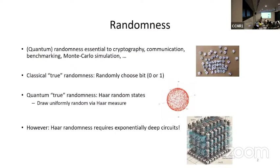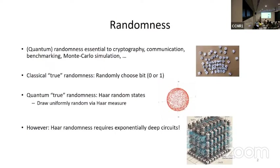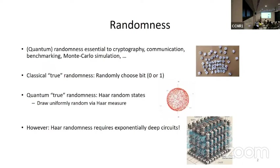So why do we care about randomness? Pseudorandomness is essentially about randomness, and randomness is important for many things such as cryptography, communication, benchmarking. And in a classical setting, you talk about Monte Carlo simulation — there you always need randomness, or even quantum randomness.